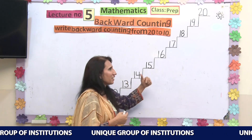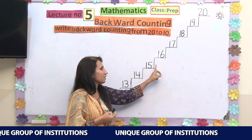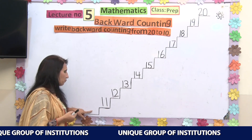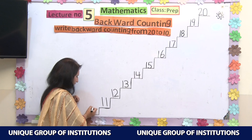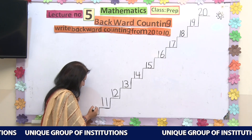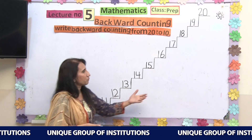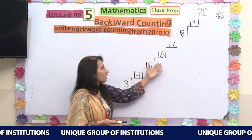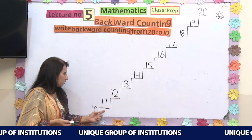Let's recall all the counting again. Read with me: 20, 19, 18, 17, 16, 15, 14, 13, 12, 11. And what comes before 11? Before 11, we have number 10 — written as 1 and 0. So let's read it again: 20, 19, 18, 17, 16, 15, 14, 13, 12, 11, and 10. So this is your backward counting from 20 till 10.